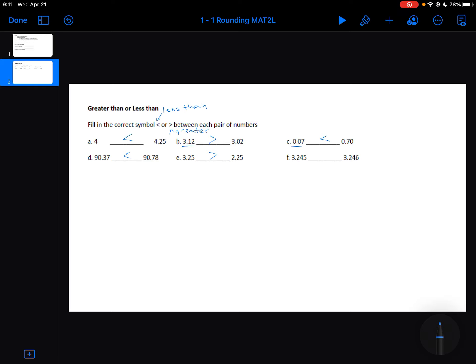And finally, 3 and 245 thousandths is less than 3 and 246 thousandths.